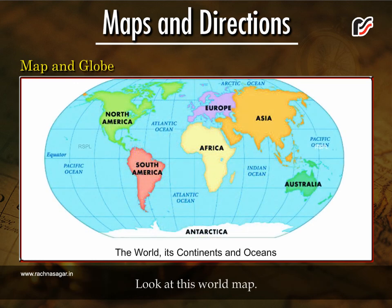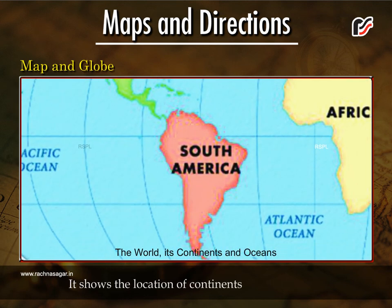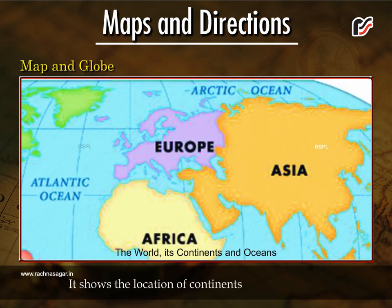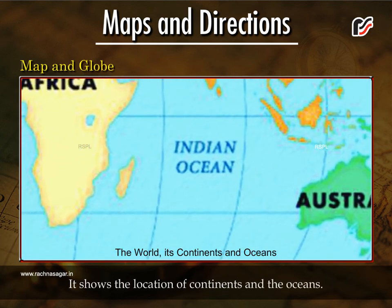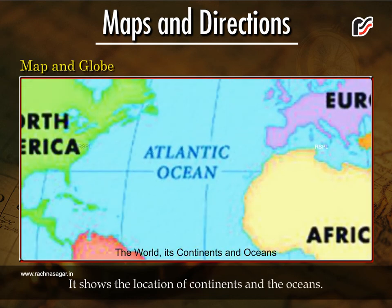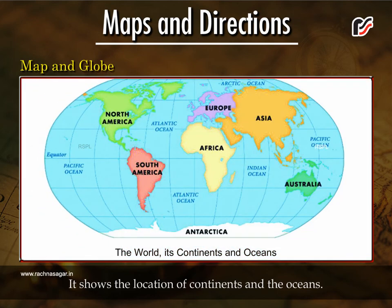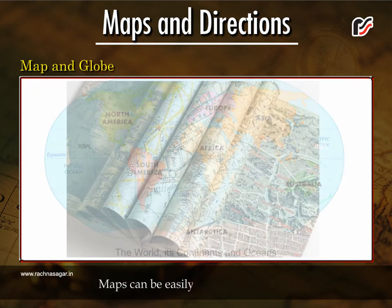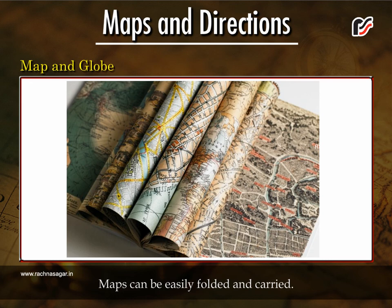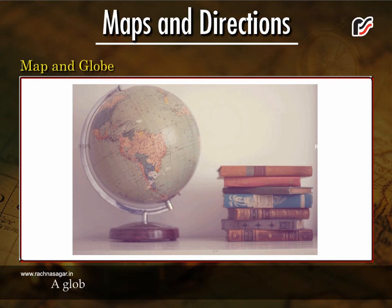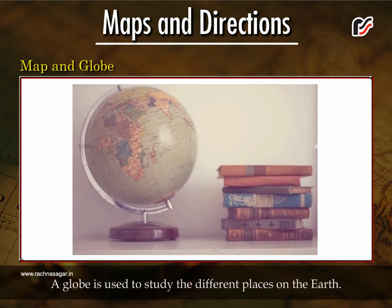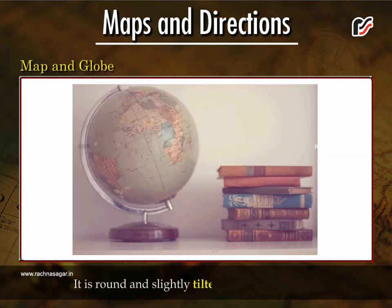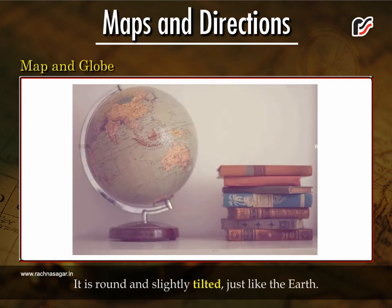Look at this world map — it shows the location of continents and the oceans. Maps can be easily folded and carried. A model of the earth is called a globe. A globe is used to study the different places on the earth. It is round and slightly tilted, just like the earth.